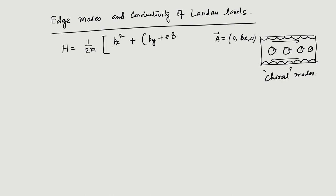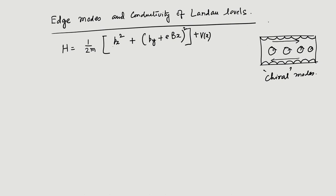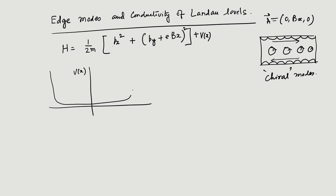In this gauge, the Hamiltonian includes a term (EBX)^2 and a potential V(X) that comes from the edges. Because of the presence of edges, there is a potential felt by the electrons — for example, a potential that is flat between -A and +A defining the sample dimensions, with infinite potential at the edges so electrons cannot escape, like a particle in a box.